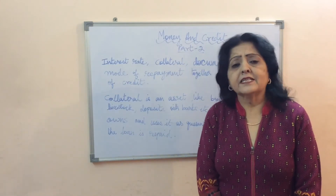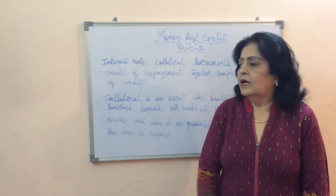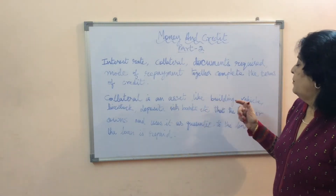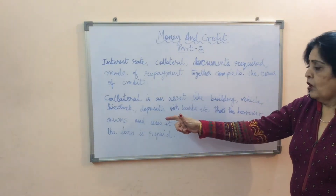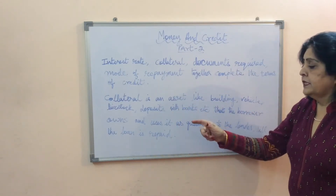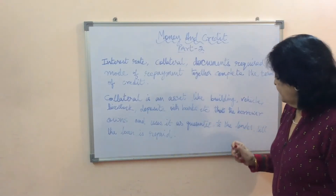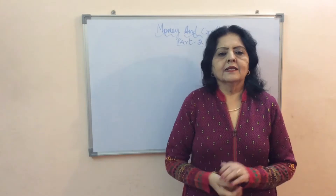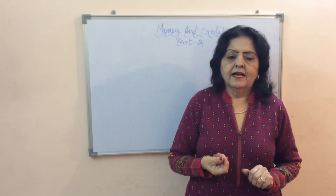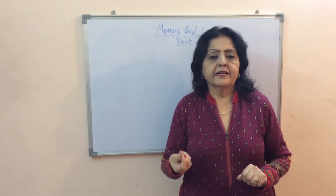Collateral is a very important condition of credit. Collateral is an asset like a building, vehicle, livestock, or deposits with banks that the borrower owns and uses as a guarantee to the lender till the loan is repaid. There are various credit arrangements and the terms of credit vary in every credit arrangement.